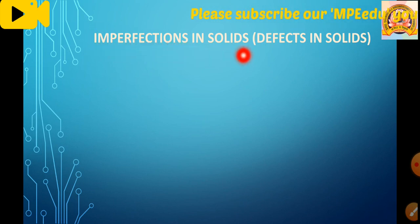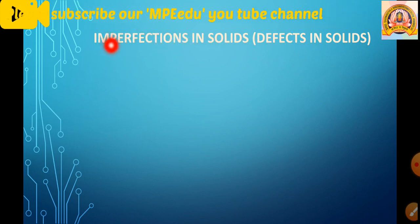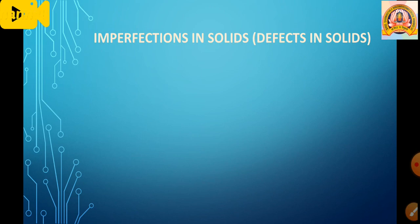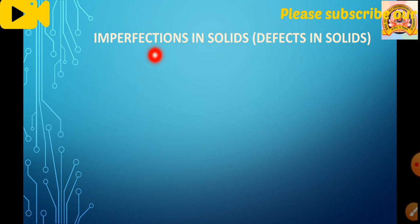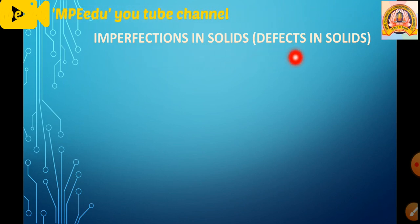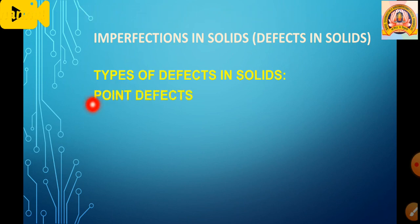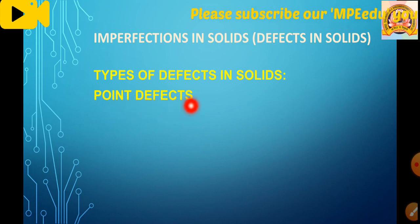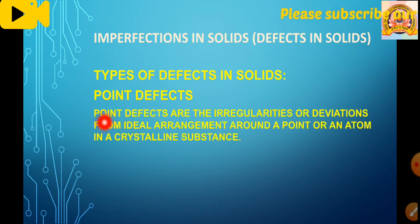These are also known as defects in solids. The word imperfection or defect itself tells us what we are discussing. There is no perfection in anything in the world, so there are some defects or imperfections observed in solid matter as well. Let us first discuss the types of defects.